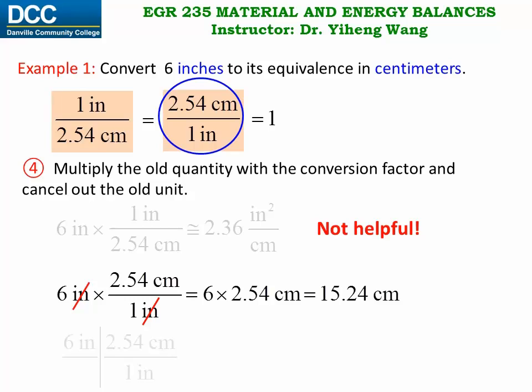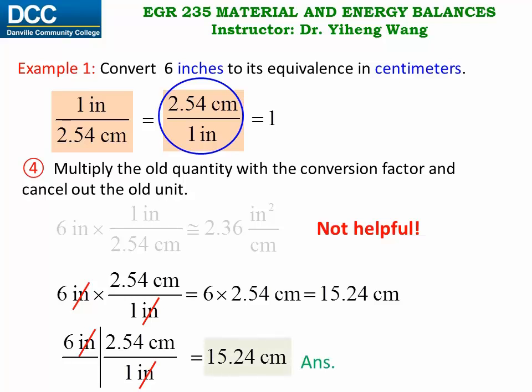Or you can set up the equation in this format — again inch can be canceled out, and again we achieve the same answer. Once again, 6 inches and 15.24 centimeters are exactly the same quantity expressed in two different units.